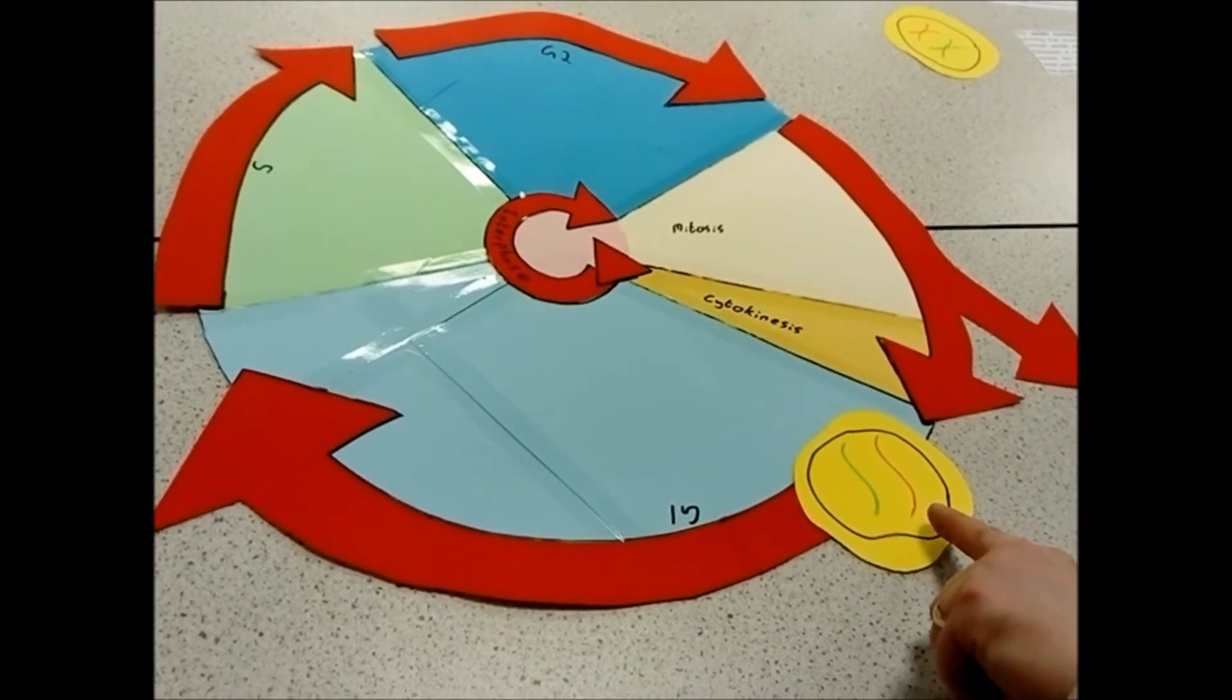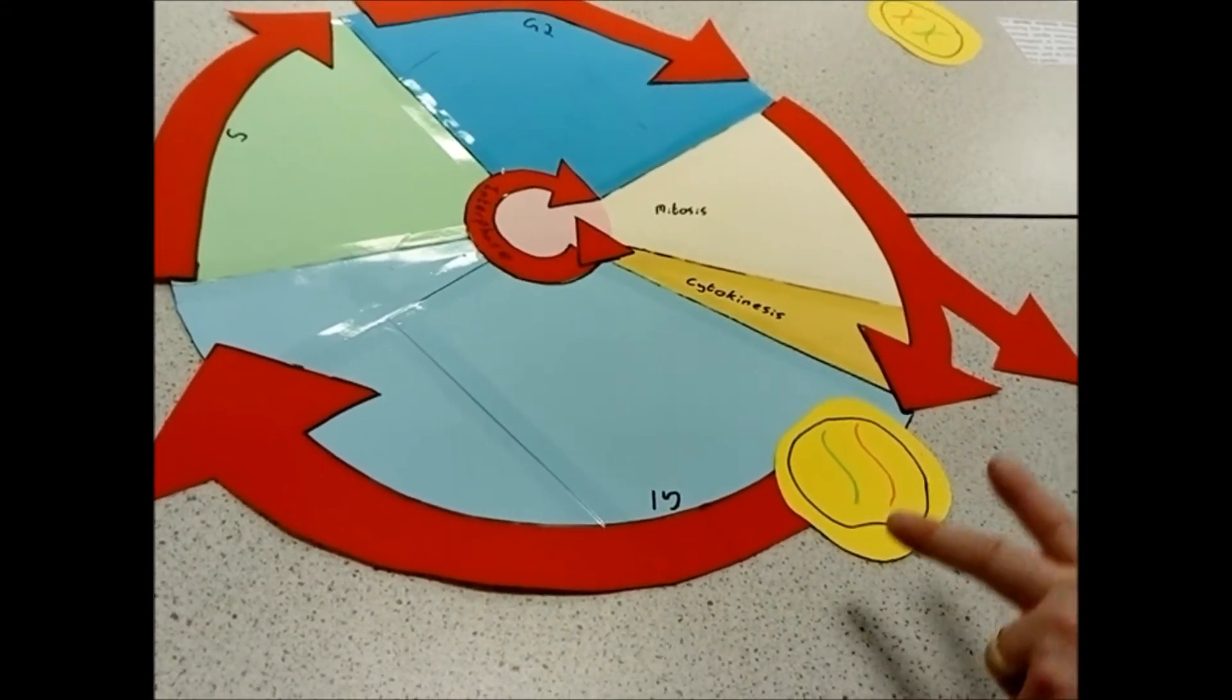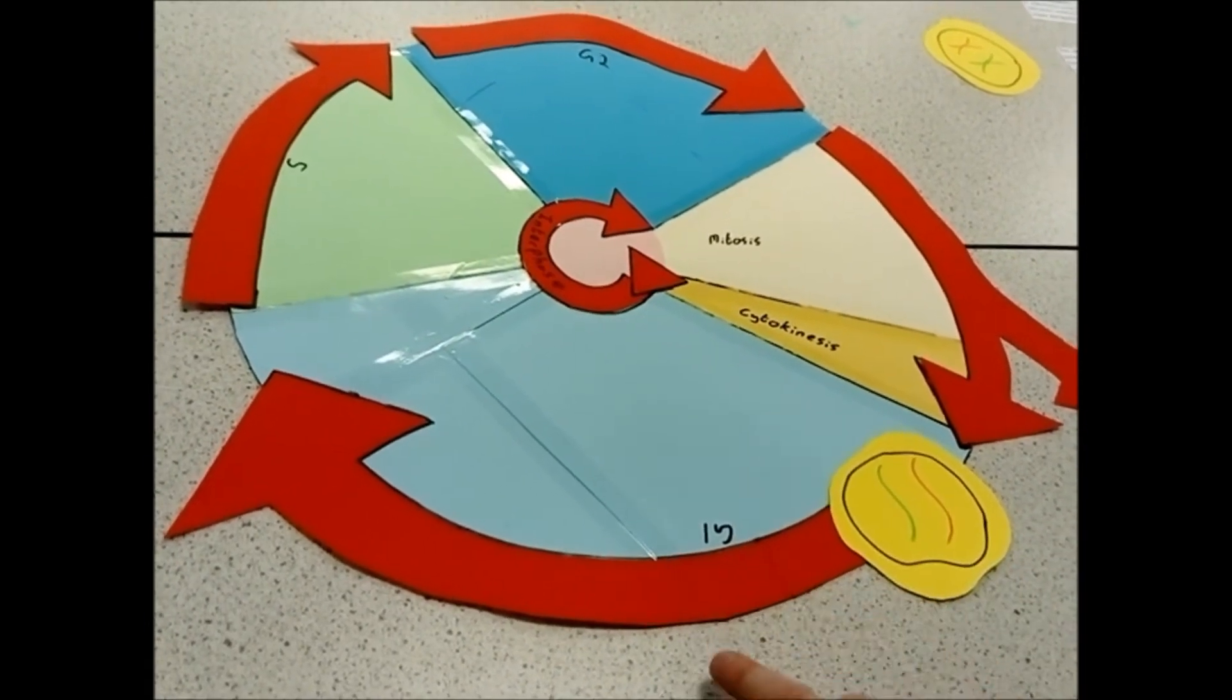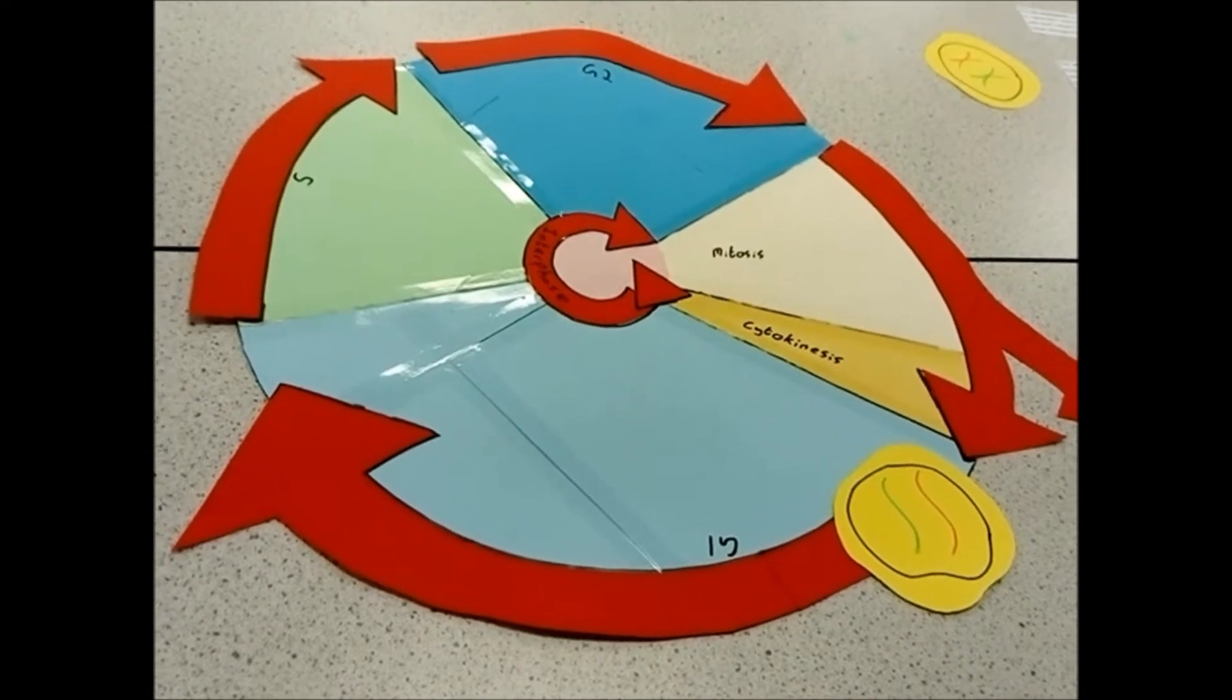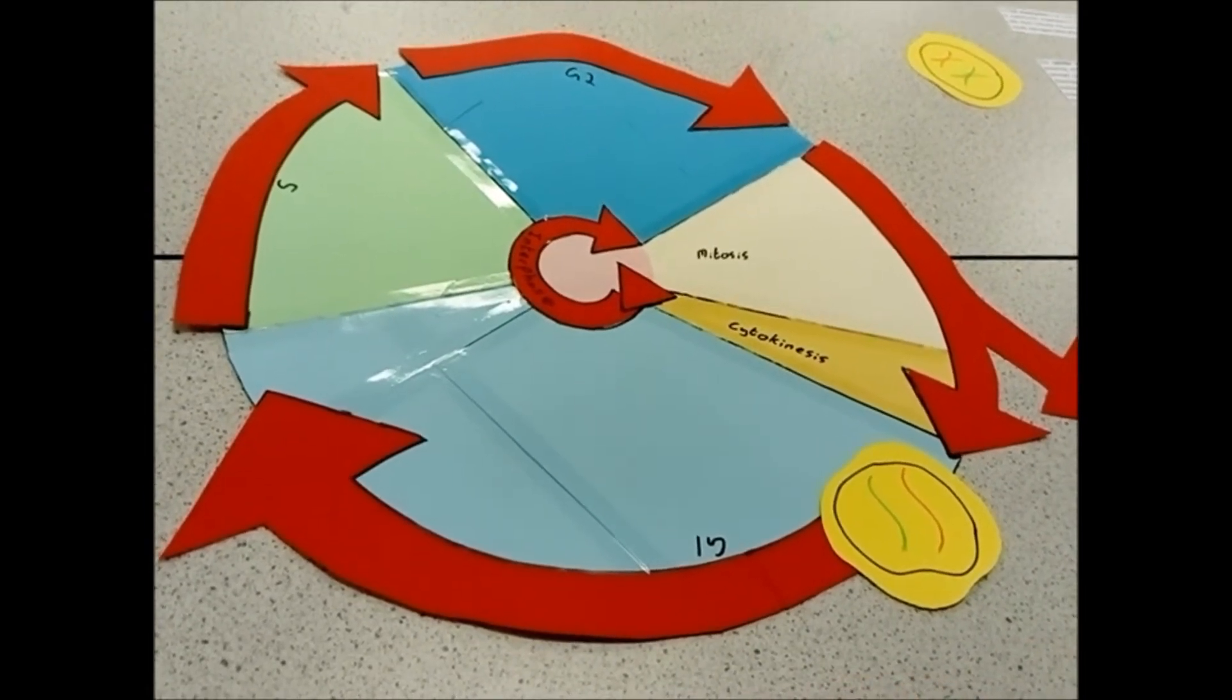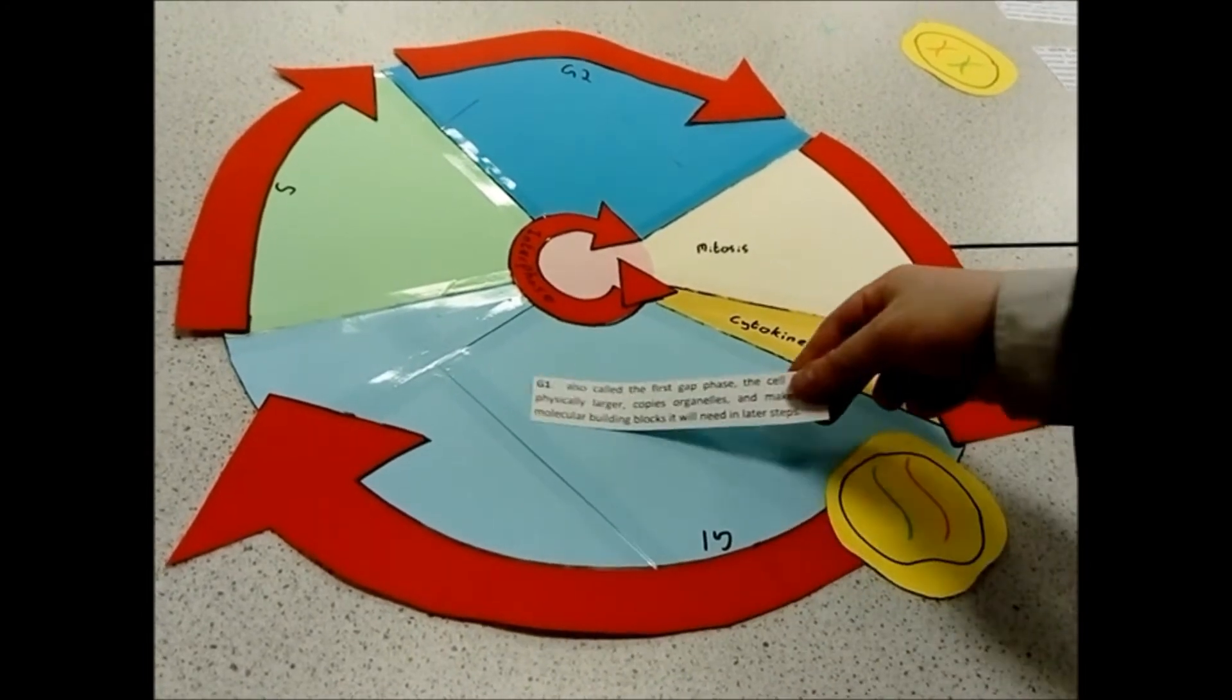So, we start off your cell cycle, you've got your cell, 46 chromosomes, which is 23 pairs of chromosomes. It enters the G1 phase. G1 phase, technically it's called the gap phase, but if you want to think of it as your growth one phase.